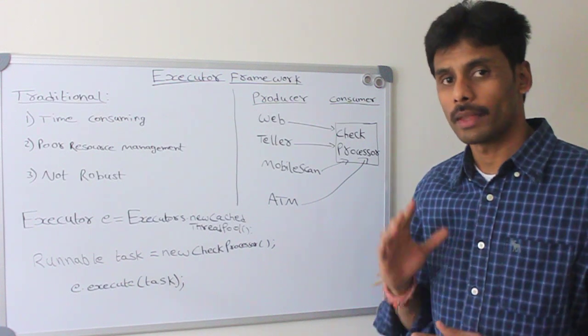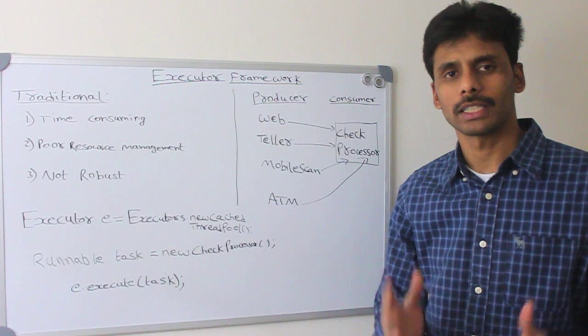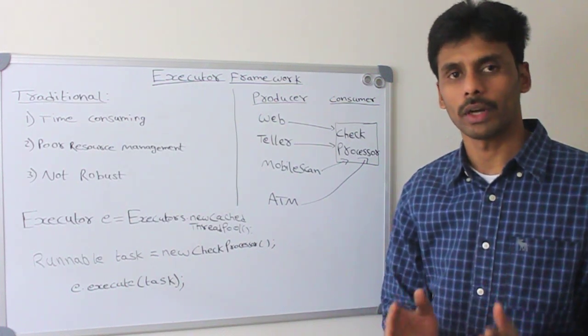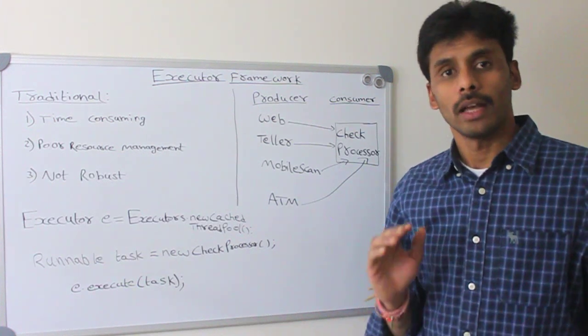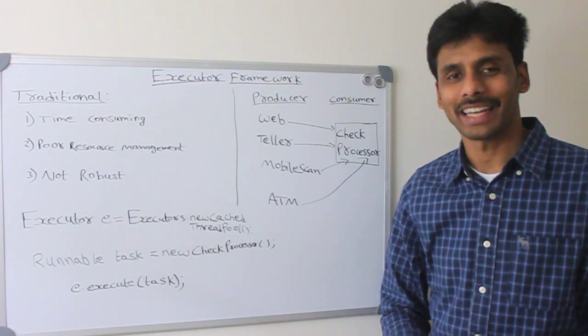And once the executor framework reaches that upper bound of threads, let's say 100 threads, it will not create any more threads. It will try to do the work with what it has. It will slow down our application, but it will degrade eventually in a nice fashion, not just going out of memory and crashing.